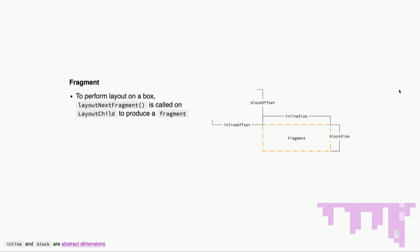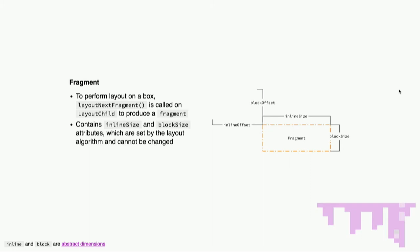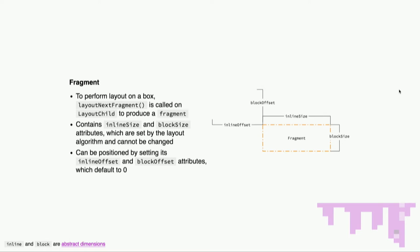Fragments are what we actually use to do positioning. To perform layout on a layout child, we call layoutNextFragment, which produces a fragment. Fragments contain inline size and block size attributes, which are set by the layout algorithm and cannot be changed. The key thing about this layout API is that when you're writing layouts, you're just dealing with position — not size. Size is dealt with by the render engine. For right-to-left or left-to-right languages, inline size is roughly your width and block size is your height. We can position fragments by setting their inline offset and block offset, which defaults to zero.